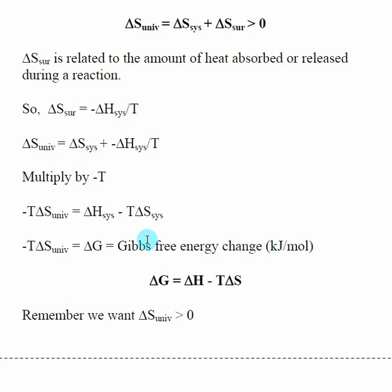The units on Gibbs free energy is going to be the same as the units on our enthalpy, kilojoules per mole. And this says that the change in our Gibbs free energy is equal to the change in enthalpy, minus temperature times the entropy change.